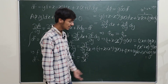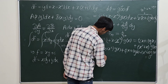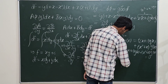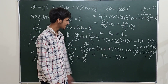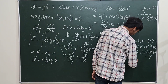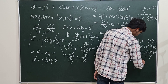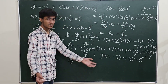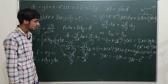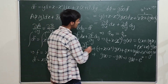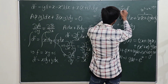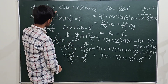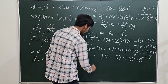Solving the ODE gives g'(x) equals negative g(x), whose solution is g(x) equals e^(−x). So the integrating factor is exponential of minus x. Multiplying this into the original inexact differential gives a new differential dΦ which is exact.